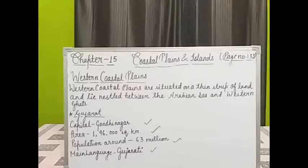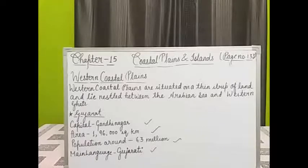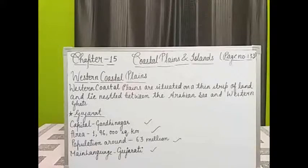Ahmedabad is situated on the banks of the river Sabarmati and is the largest city of Gujarat. The tourist places in Ahmedabad include Gandhi Ashram, Hussain Doshi Gufa, Kankaria Lake, and Kite Museum. People speak Gujarati as the main language; they also speak Hindi and English. Ahmedabad is the centre of trade and commerce in Gujarat and is also called the Manchester of the East because of its thriving textile industry.